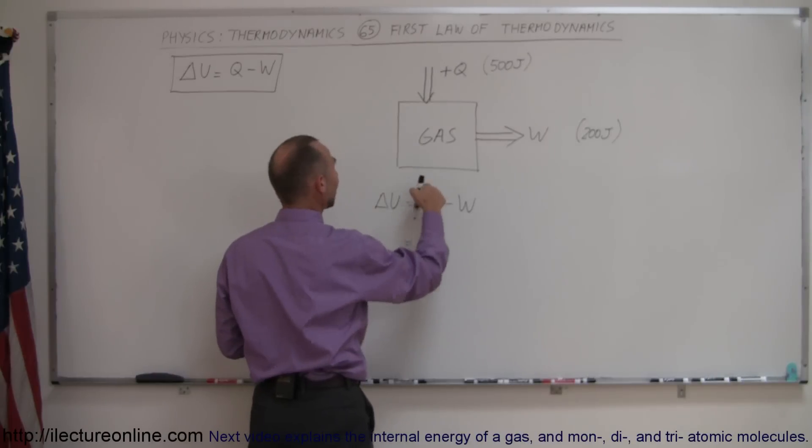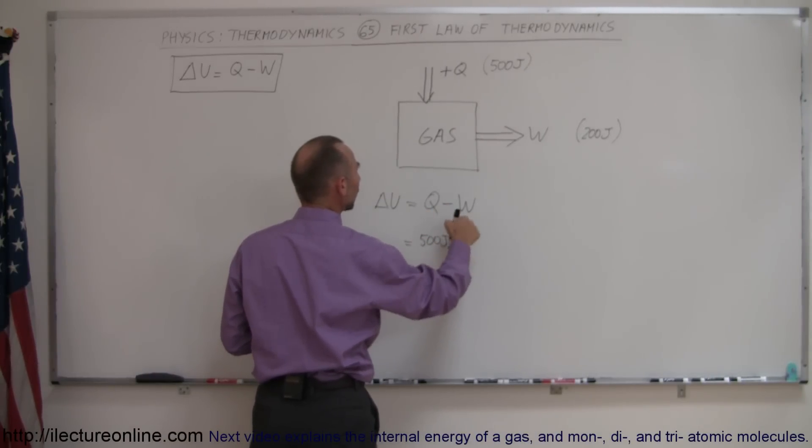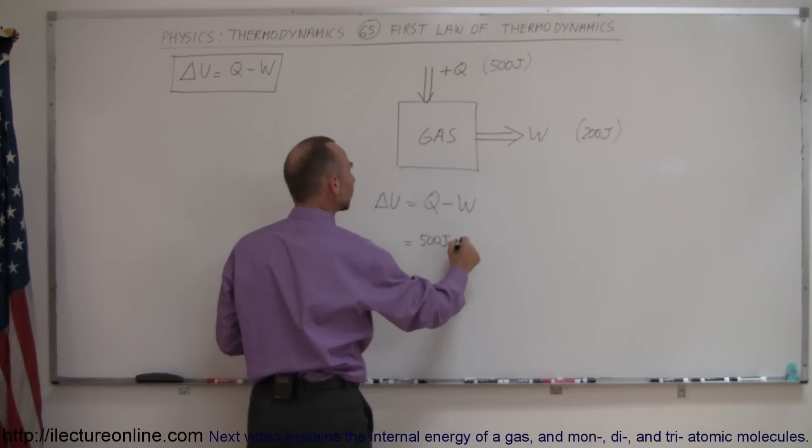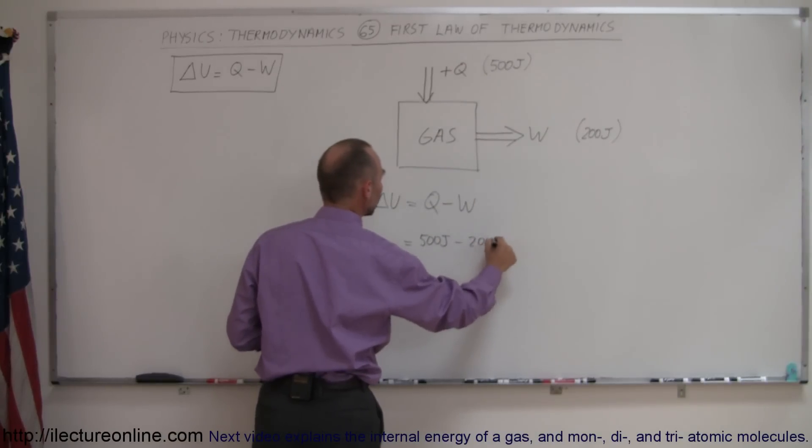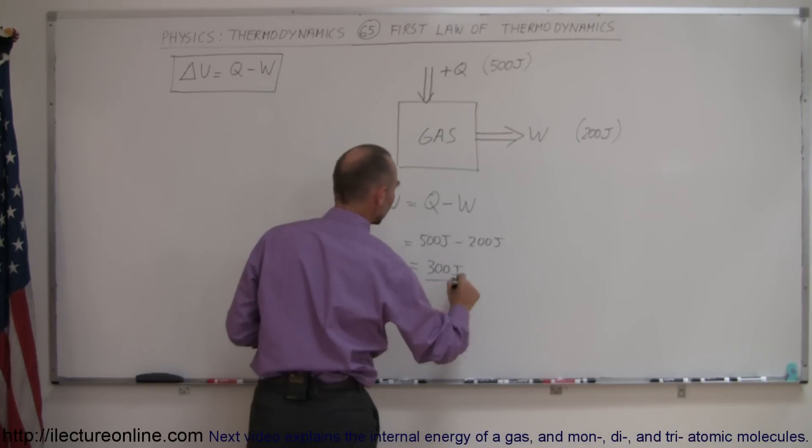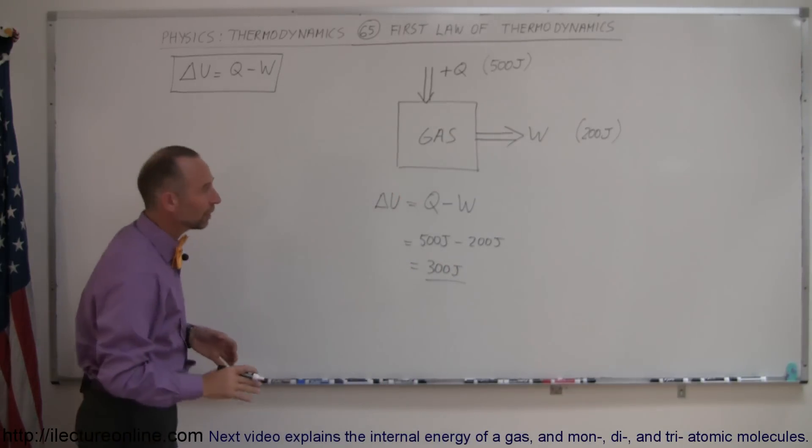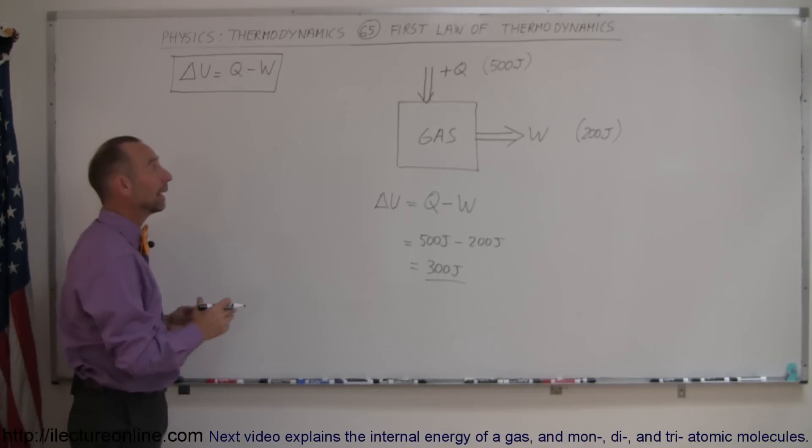And so since we're adding heat to the gas, that is a plus 500 joules. And then we're doing work, the work is done by the gas, so it's minus 200 joules. And so the change in internal energy would be 300 joules. So very simple, very straightforward. If you have this concept, that's a big one. And now let's see how we apply it in the next number of videos coming up.